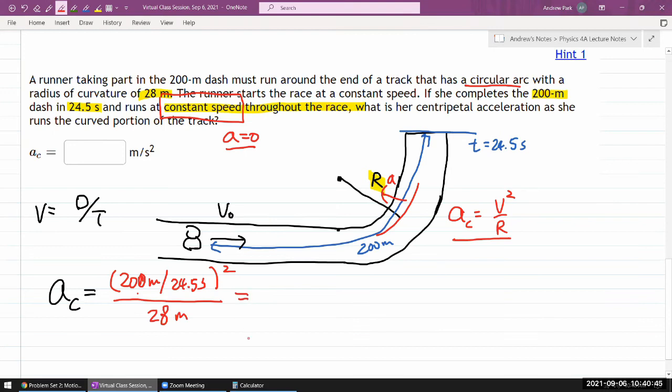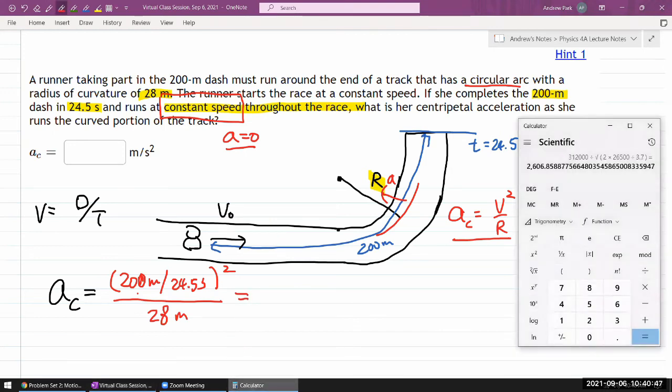Parenthesis open, 200 divided by 24.5, parenthesis closed, squared, divided by 28. You should always know how your calculator works. I know my own calculator well enough that the exponent takes precedence over division by 28. That is the normal order of operations. Okay, 2.38 meters per second squared.